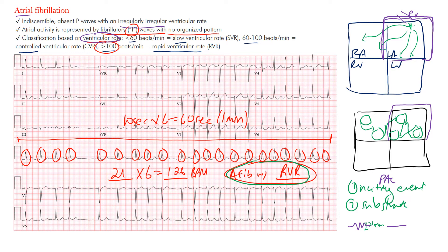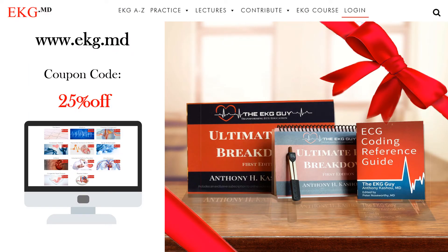For adult patients: a rate less than 60 beats per minute is a slow ventricular rate; between 60 and 100 is a controlled ventricular rate; over 100 is a rapid ventricular rate. In our example we saw atrial fibrillation with rapid ventricular rate — AFib with RVR. That's the end of this lecture.